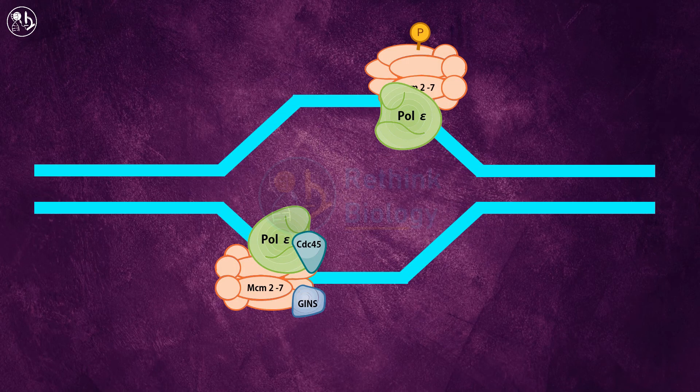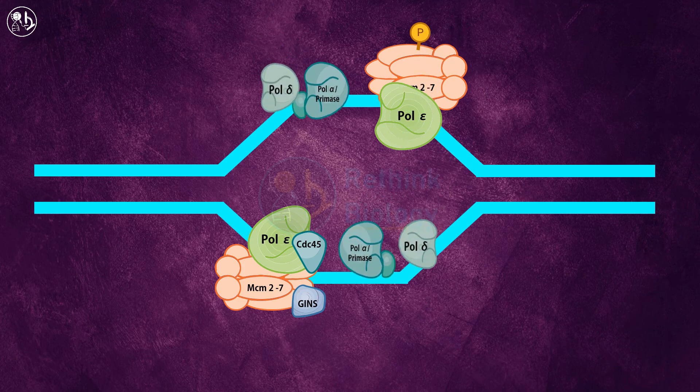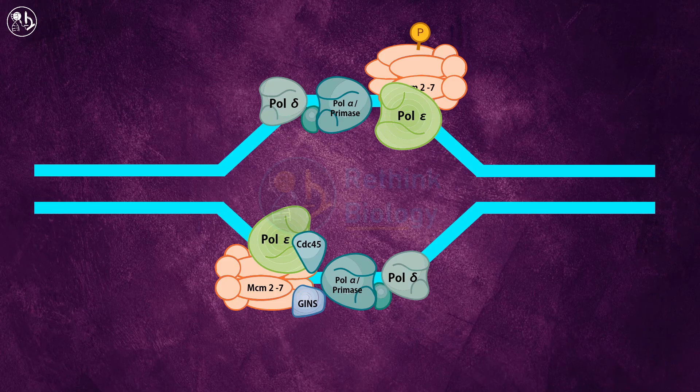As the DNA unwinds, DNA polymerase alpha along with the primase and DNA polymerase delta are recruited on both strands, and after that the DNA elongation begins.